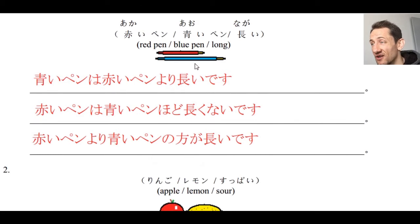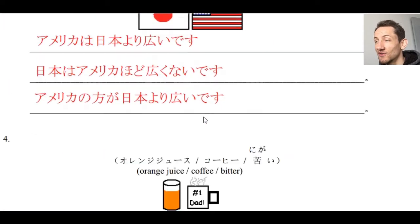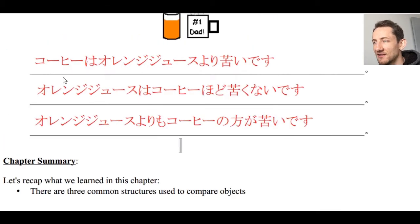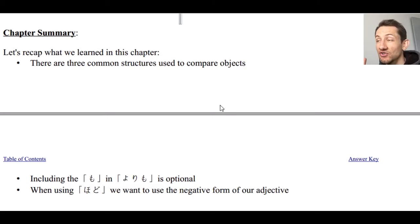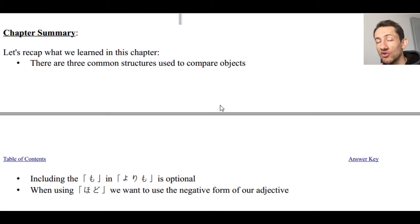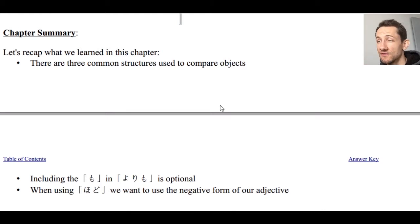If you want to emphasize one object over the other you can choose accordingly, but you might want to consult with a Japanese person for more details about nuance. They're basically the same. Don't just use yori, don't just use hodo, don't just use no hoga — use all three of them, learn them all in conjunction, and it will be easier, I assure you.